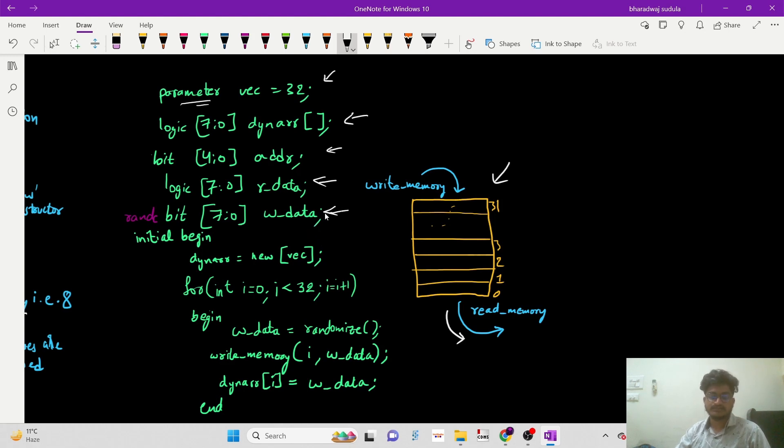randomizing some values to write into the memory. We have constructed some space for a dynamic array which is 32 locations, and then following this, we have inserted some data into the memory using the randomized values.